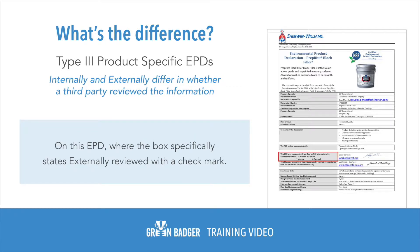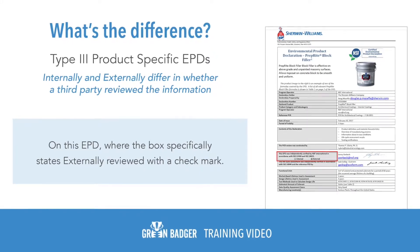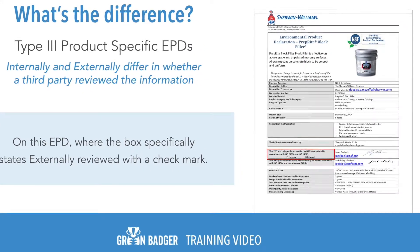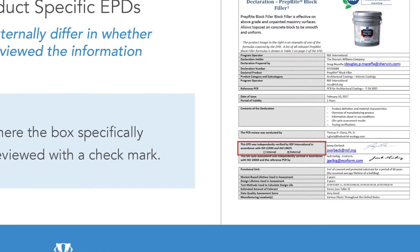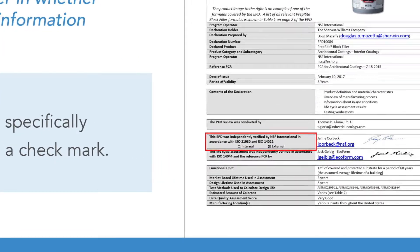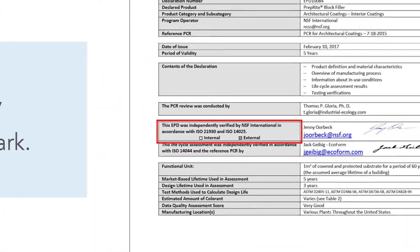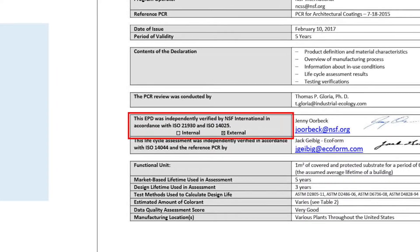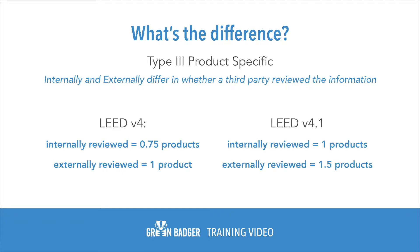Type 3 internally and externally reviewed EPDs just differ in whether an outside third party reviewed the information. You'll see it checked on an EPD pretty obviously, such as the case on this EPD where there's a box that says internally reviewed and a box that says externally reviewed, and the externally reviewed is clearly checkmarked. For version 4, internally reviewed are worth three-quarters of a product and externally reviewed are worth one product. For version 4.1, it is one product for internally reviewed and 1.5 products for externally reviewed.